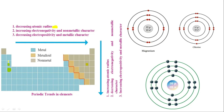As we go down a group, the row number increases, which means new shells are added. If it was the third row, there were three shells; if it's the fourth row, there are four shells — and adding shells increases the size. So whenever we come down in the same group, the atomic size or radius increases because new shells are added. Very simple.